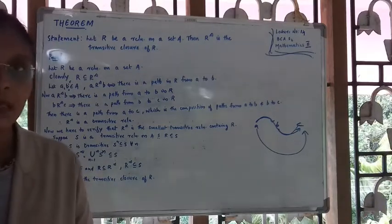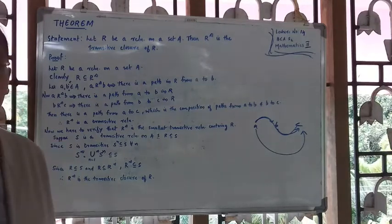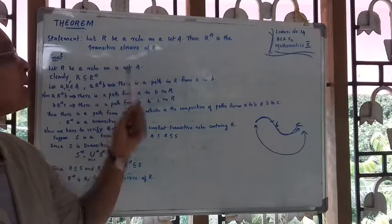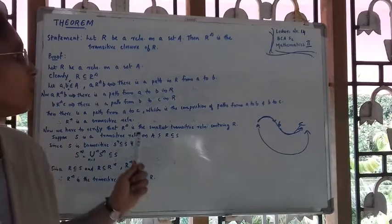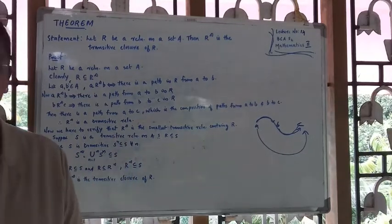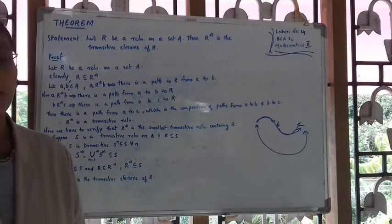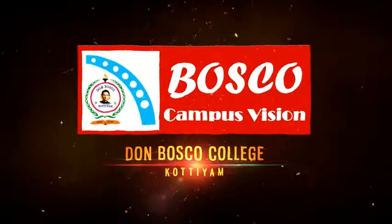That means R-Infinity is the smallest transitive relation containing R. That means R-Infinity is the transitive closure of R. Hence, when we have a relation R on a set A, R-Infinity is the transitive closure of R. This is the theorem we have studied today — its statement and proof. That's all for today's session. Thank you.